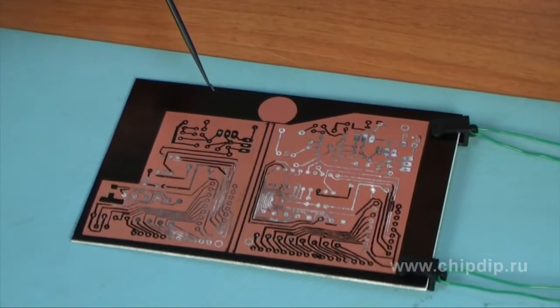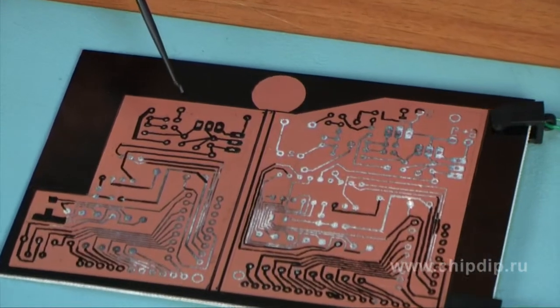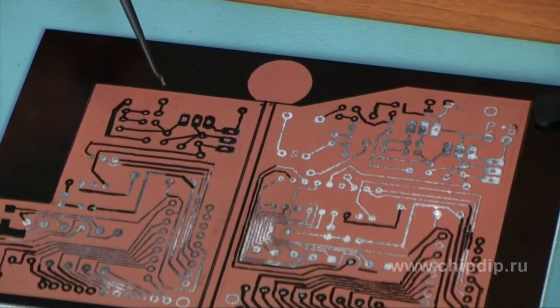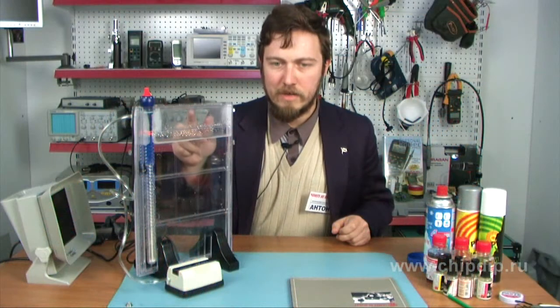The quality of the work depends on two operations. First, the plotting of the future board's drawing on the glass-fiber plastic. Second, the correct process of etching the glass-fiber plastic. The device ET10 is designed to simplify and speed the process of etching, and it allows achieving good quality circuit boards.